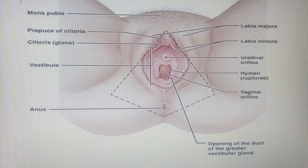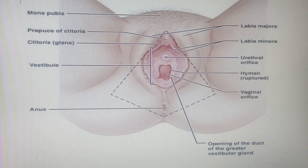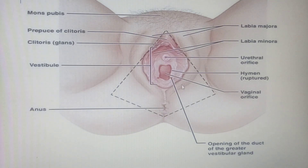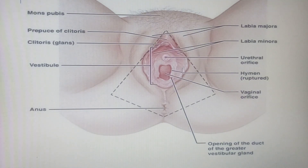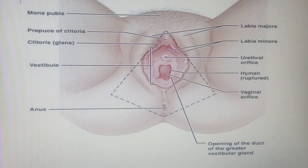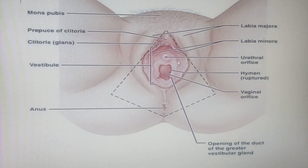One important thing to know is that the labia majora is homologous to the scrotal sac or scrotum in males, which contains the testes. The labia minora is homologous to the ventral portion or underside of the penis.